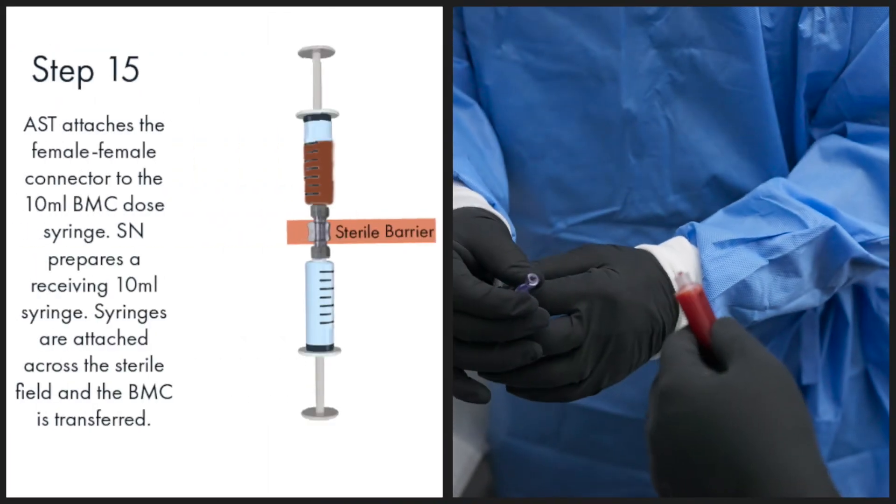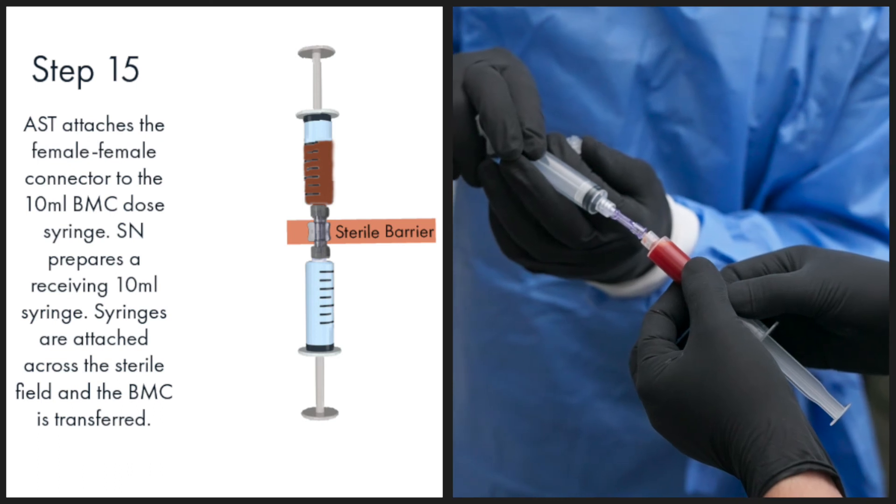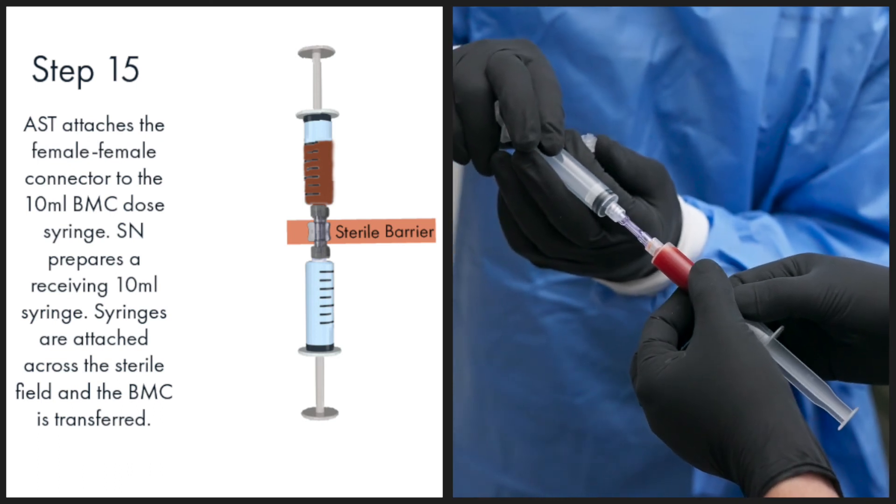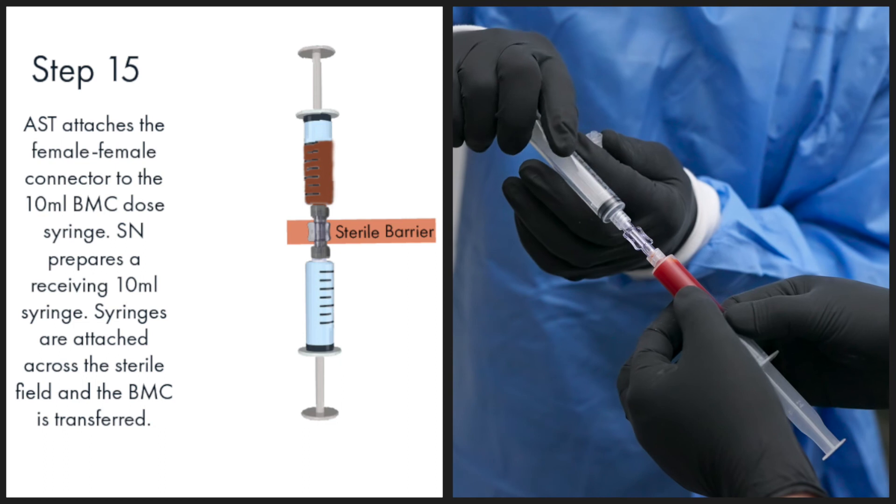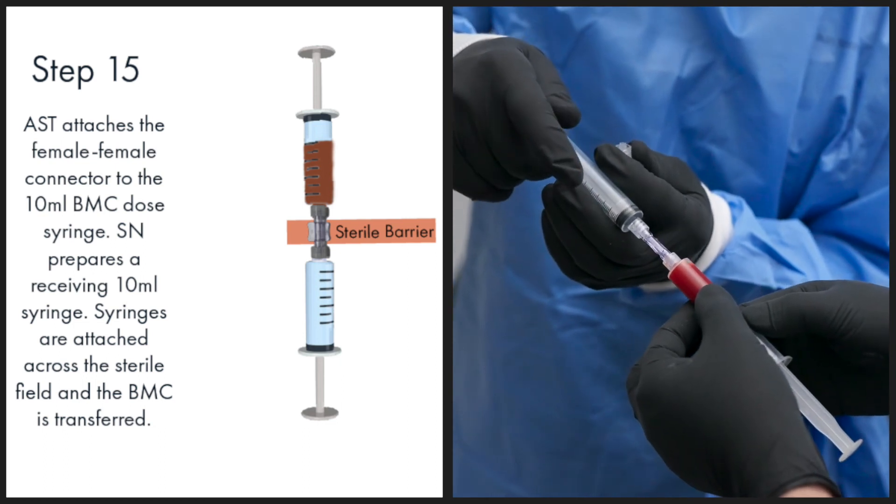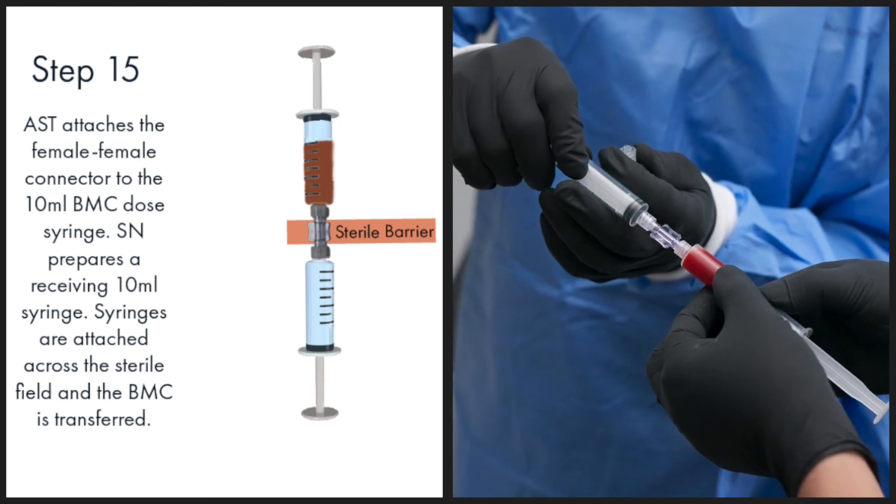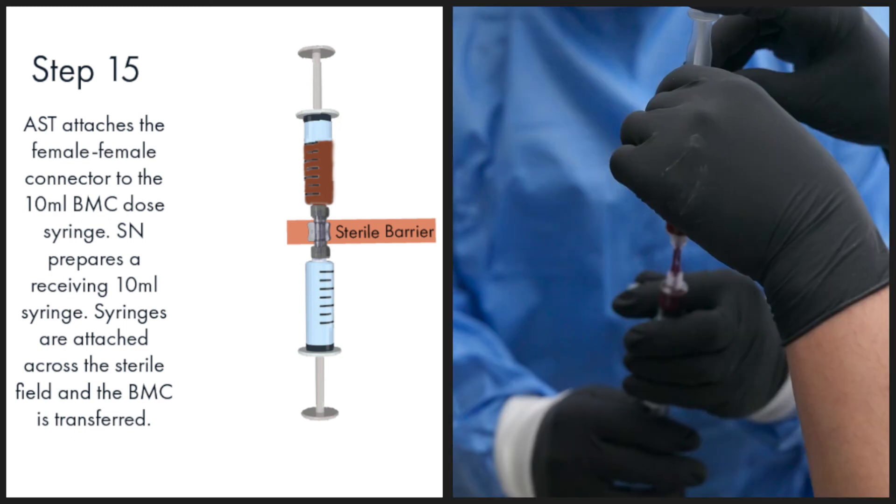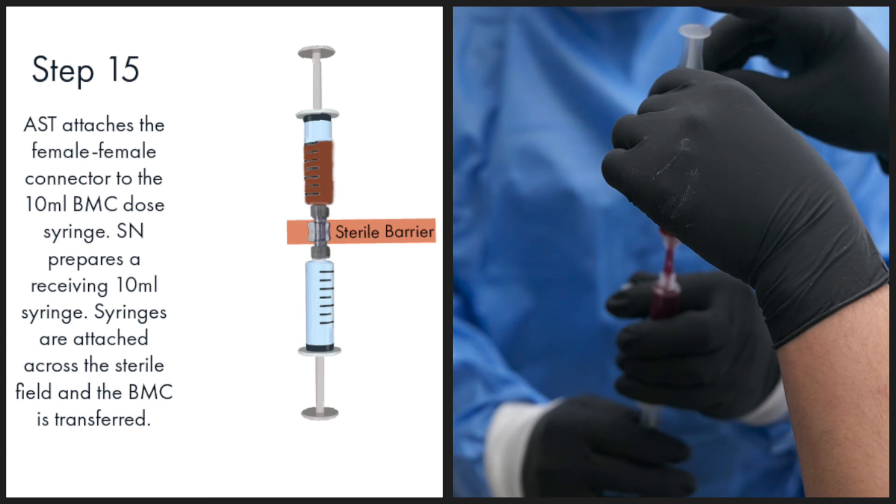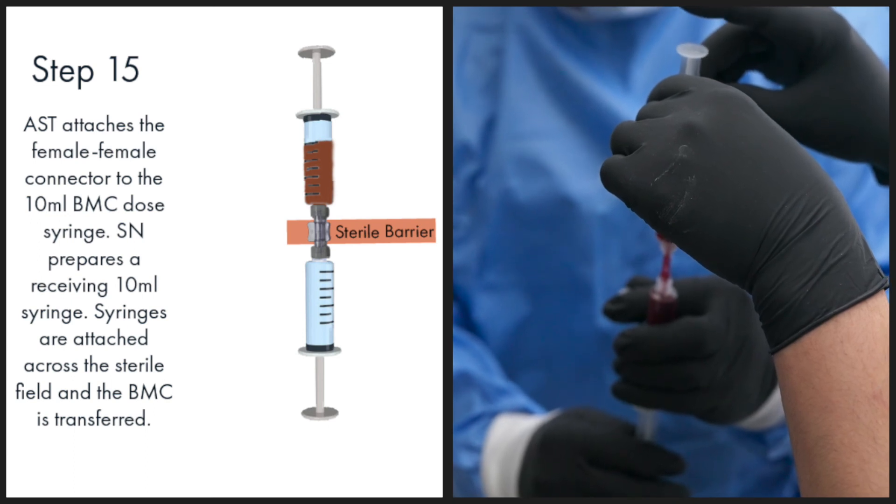The assistant will attach the female to female connector to the 10 milliliter bone marrow concentrate dose syringe. Scrub nurse attaches a prepared 10 milliliter syringe to the other side of the female to female connector to receive bone marrow concentrate across the sterile field.